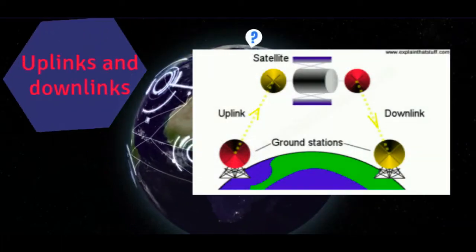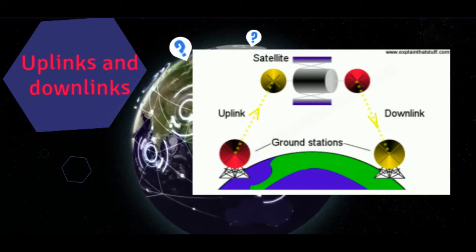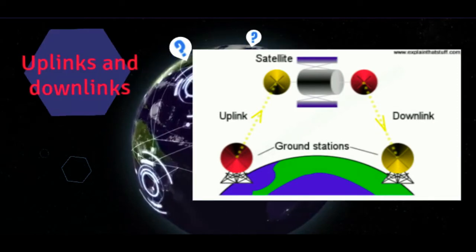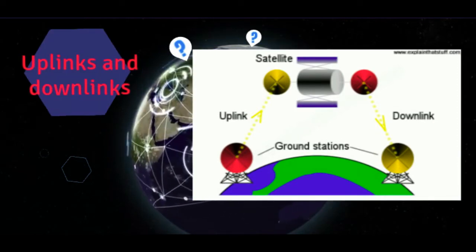While a communications satellite might relay a signal between one sender and receiver with one uplink and one downlink, satellite broadcasts typically involve one or more uplinks for one or more TV channels and multiple downlinks to ground stations or individual satellite TV subscribers.